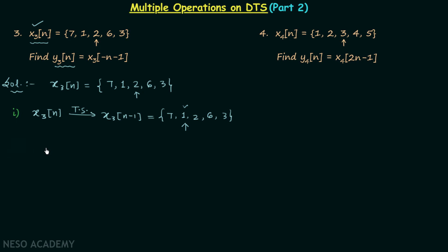One very important point: there is no priority order for the operations. You can perform any operation, but the only thing you need to focus on is the variable n. Signal x3n means n is the independent variable, so whenever you perform any operation it should be with respect to n. If n is not isolated, isolate it first and then perform the operation — you will never make any mistake in multiple operations.